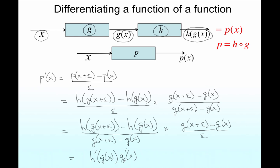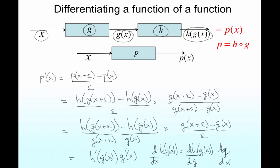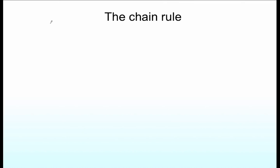In Leibniz notation, d by dx of h of g of x is dh by dg — evaluated at g of x — multiplied by dg by dx. Don't think of this as the dg's cancelling, but it's a nice way of remembering it. The generalization of what we've just learned is called the chain rule.